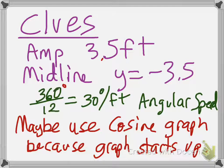The angular speed, we have 360 degrees for every 12 feet. So that's 30 degrees per foot is our angular speed. And I would use the cosine graph because we started up. All right, here are some more clues. So go ahead and pause the tape.